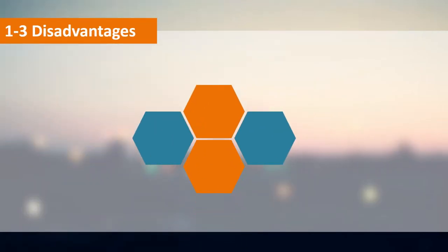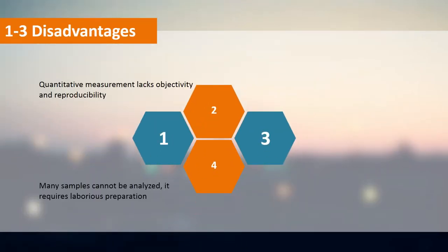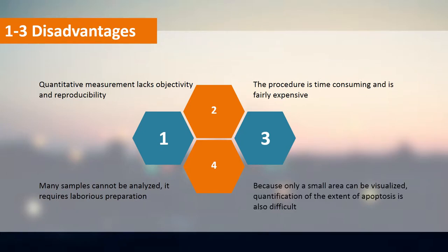Quantitative measurement lacks objectivity and reproducibility. The procedure is time-consuming and is fairly expensive. Many samples cannot be analyzed as it requires laborious preparation. Because only a small area can be visualized, quantification of the extent of apoptosis is also difficult.